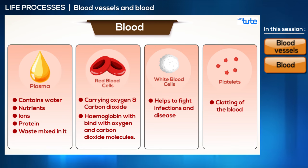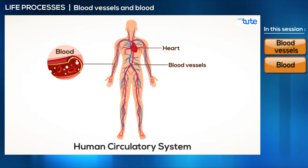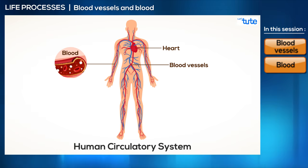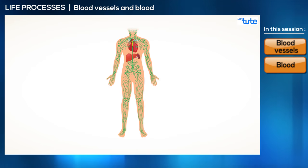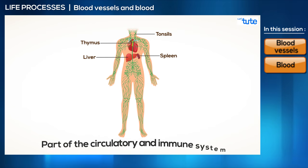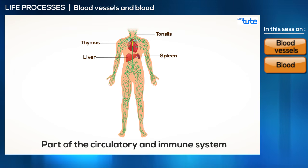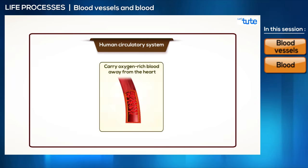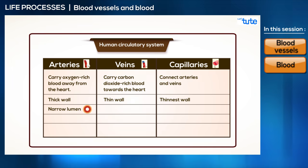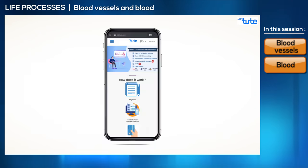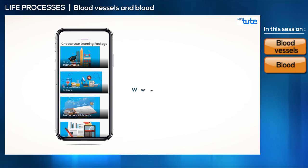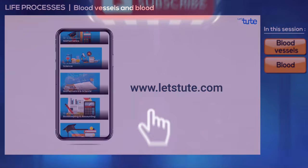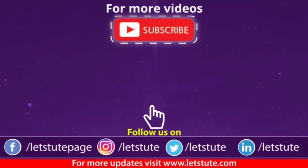That is it for today's session. We have now completed the major components of the circulatory system. But there's another system that runs parallelly in the body and is a part of both the circulatory and immune systems — tune in to our next session to find out what that is. I hope this session was informative. If yes, please give us a thumbs up. Do take a look at the online courses on our platform www.letstude.com. See you next time — until then, keep watching, keep learning, and subscribe to Let's Tude. We make it easy.